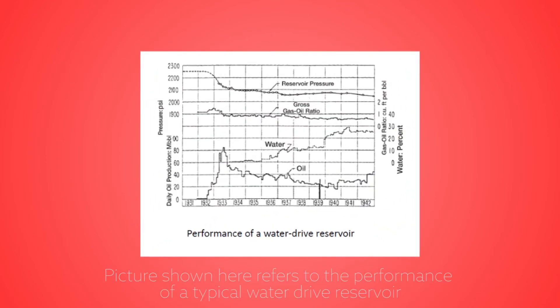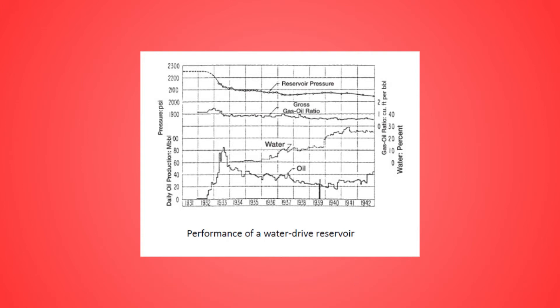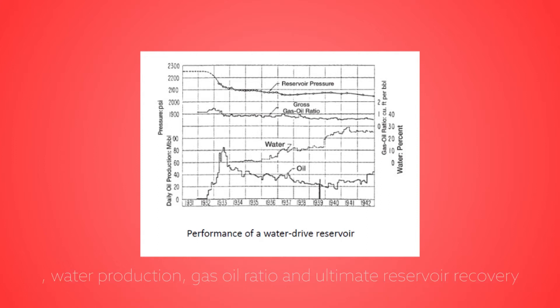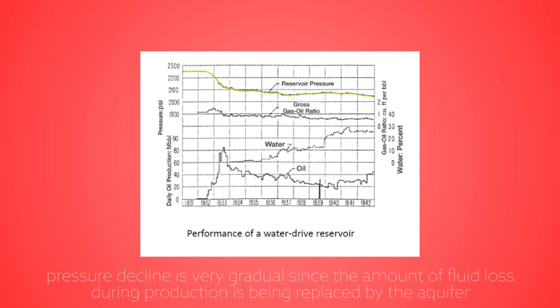The picture shown here refers to the performance of a typical water drive reservoir. The performance of a reservoir is usually characterized by the current reservoir pressure, water production, gas oil ratio, and ultimate reservoir recovery. First and foremost, looking at the reservoir pressure, pressure decline is very gradual since the amount of fluid loss during production is being replaced by the aquifer.